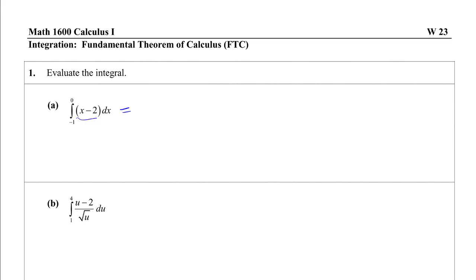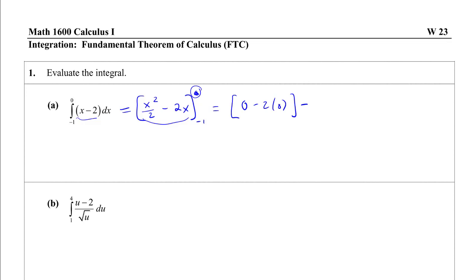Integrating x minus 2: integrating x gives x squared over 2, integrating 2 gives 2x. We put that in brackets from -1 to 0, then evaluate the expression at 0, which gives 0 over 2 minus 2 times 0, then subtract the evaluation at negative 1.